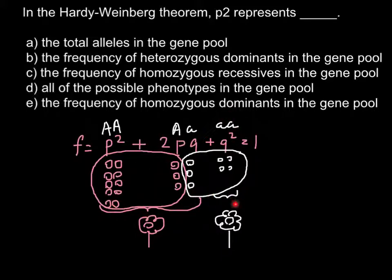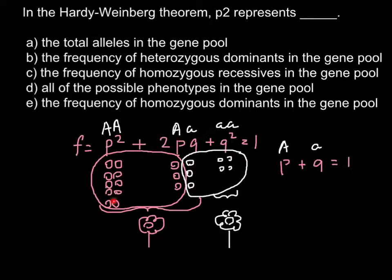These two types of alleles make three genotypes and two phenotypes. We can say that all alleles P — representing the dominant allele capital A — plus all alleles Q — representing all recessive alleles — equal to 1. For example, here we have five plants that are homozygous dominant, so we have ten dominant alleles, plus three plants that are heterozygous, giving us three dominant alleles. So ten plus three gives us 13 dominant alleles in this gene pool.